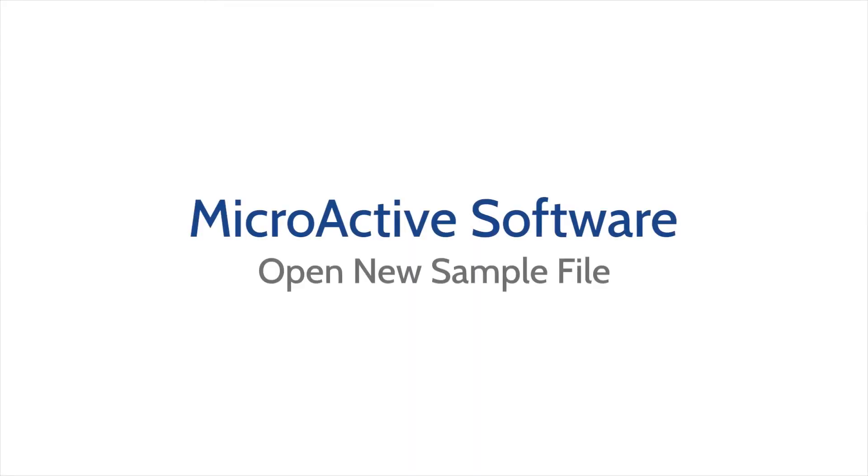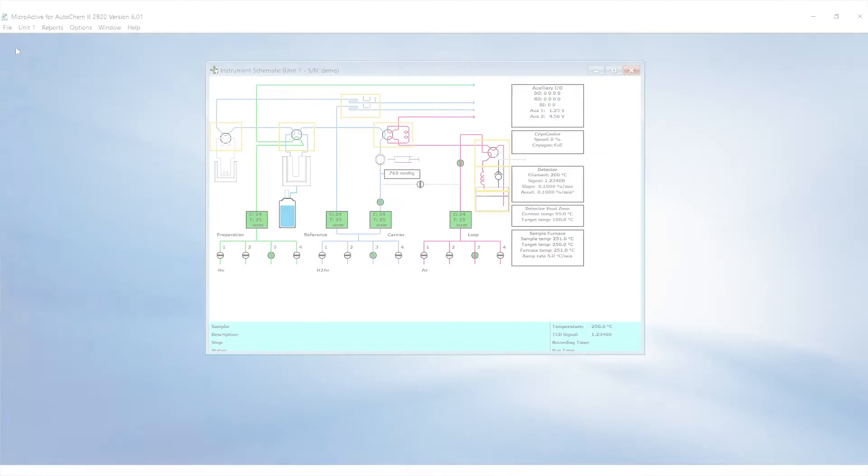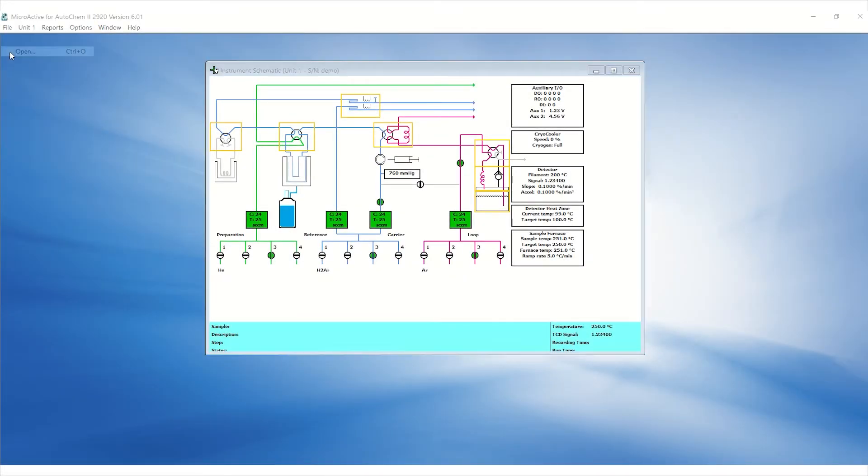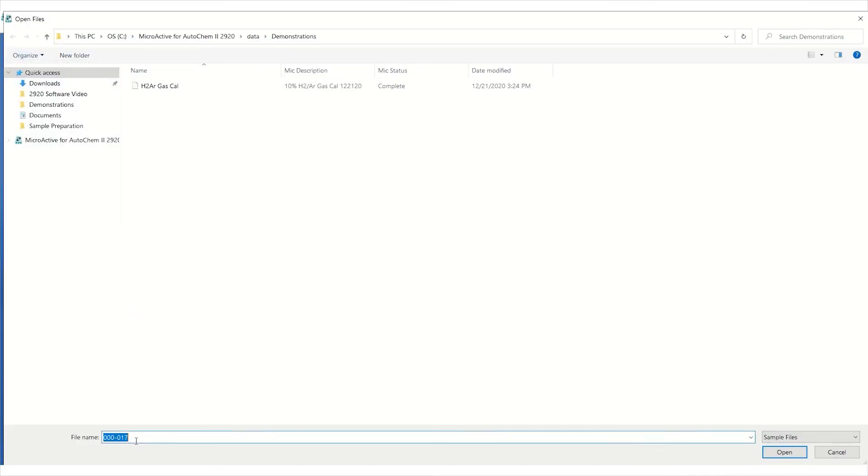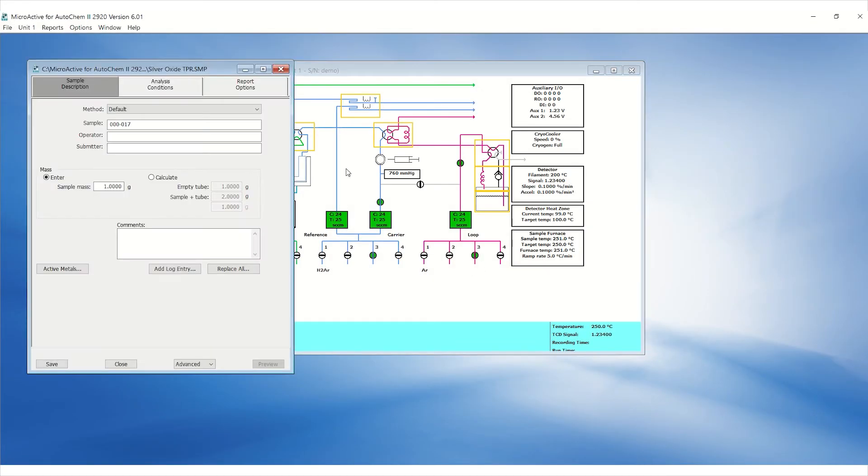Open a new sample file in the microactive software by clicking File Open and enter the name of your choice and click Open. Click OK when asked if you wish to create a new sample file.